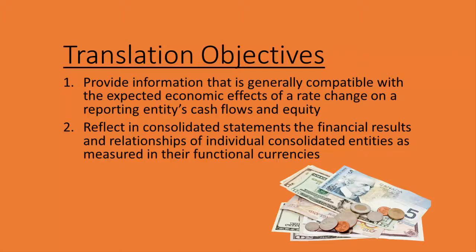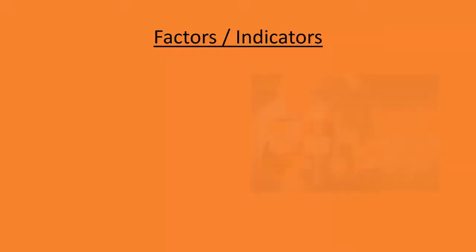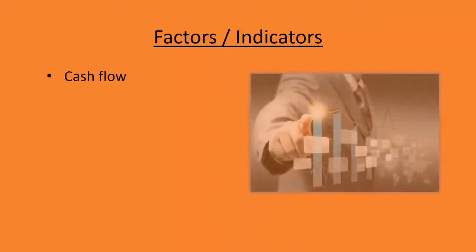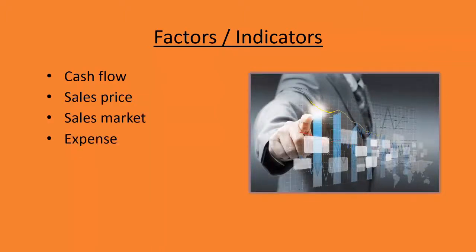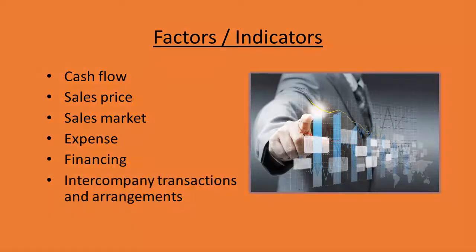The FASB does provide a list of factors that management should consider when making the determination of the functional currency. These indicators are cash flow indicators, sales price indicators, sales market indicators, expense indicators, financing indicators, and intercompany transactions and arrangements indicators.